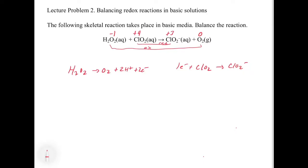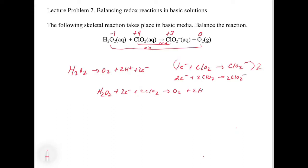Now let's go on to step four: multiply each reaction by a factor so that the electrons cancel when you combine the two reactions. We're going to multiply the reduction reaction by two to make that work out, because we have two electrons in the oxidation and only one in the reduction. That gives us: 2e⁻ plus 2 ClO₂ gives 2 ClO₂⁻. Now we combine: the reactants on the left are H₂O₂, and then we bring everything together. The 2 H+ can get canceled, the two electrons can get canceled, and that basically leaves us with the final answer if this were in acid.